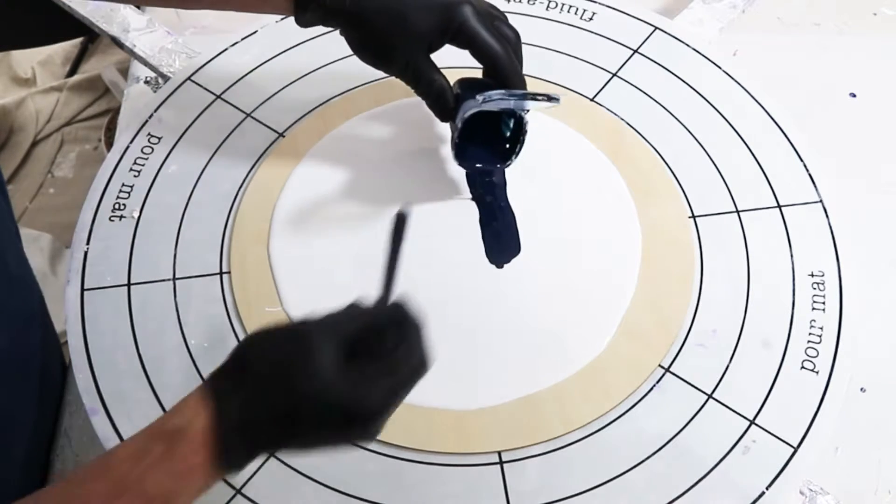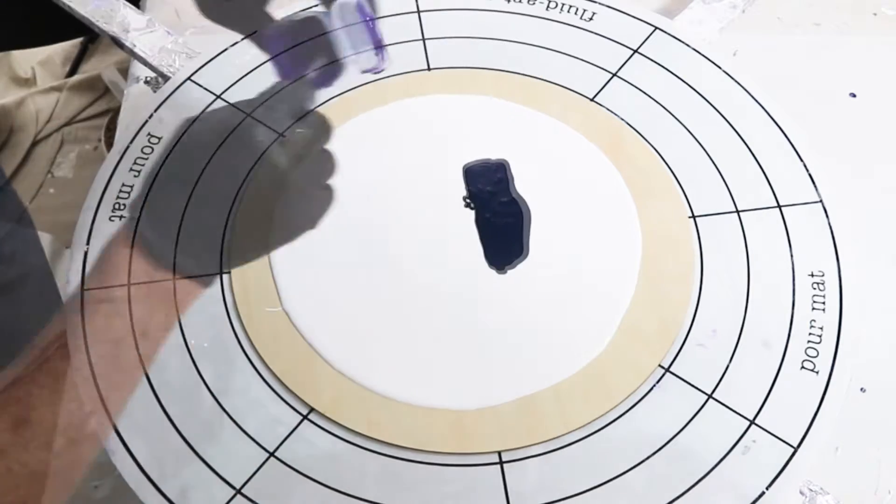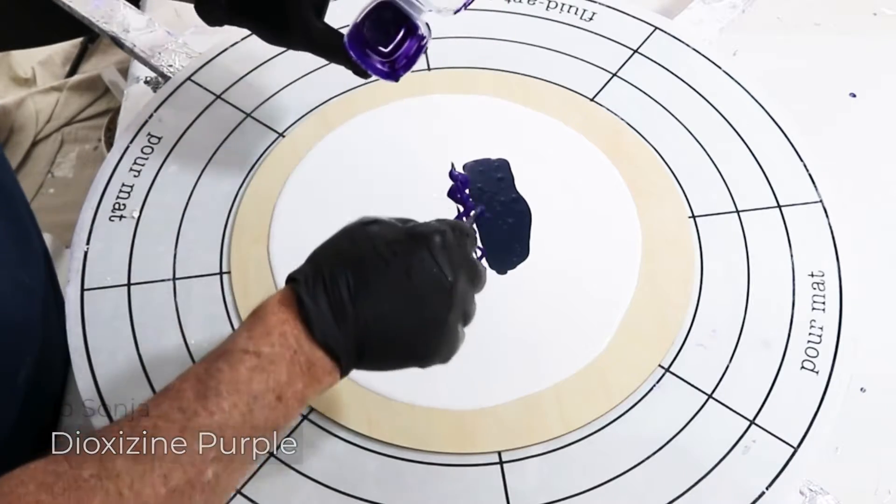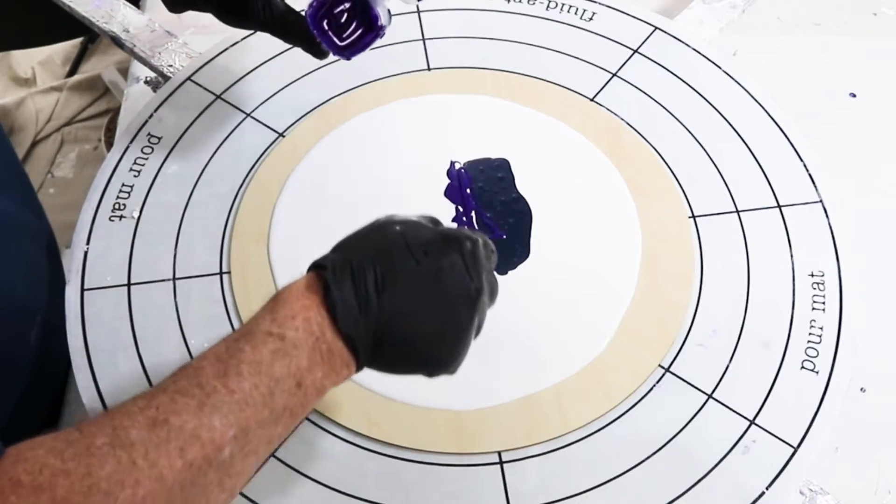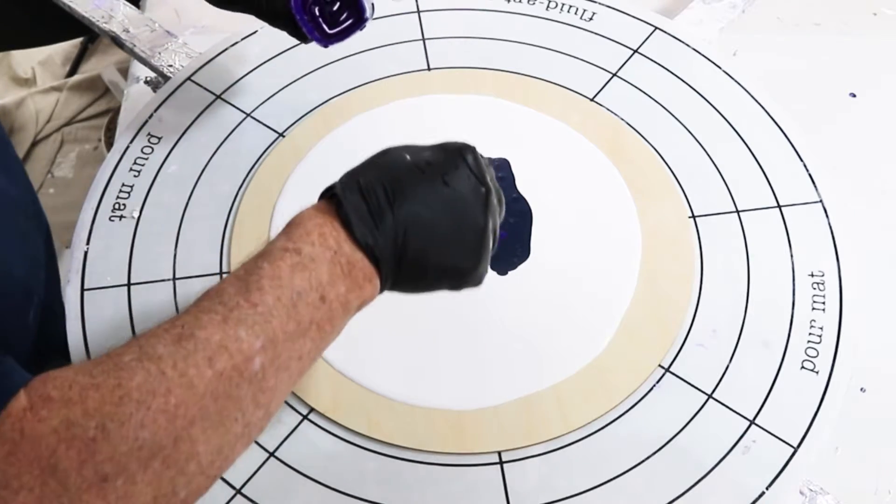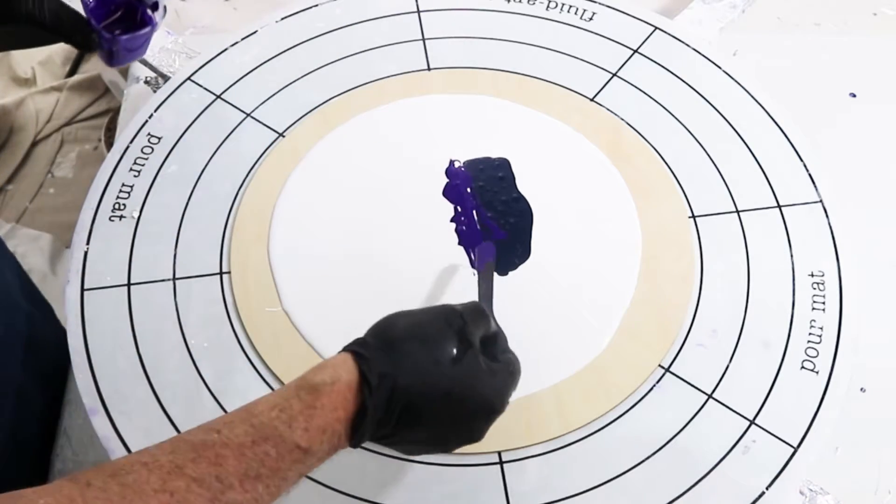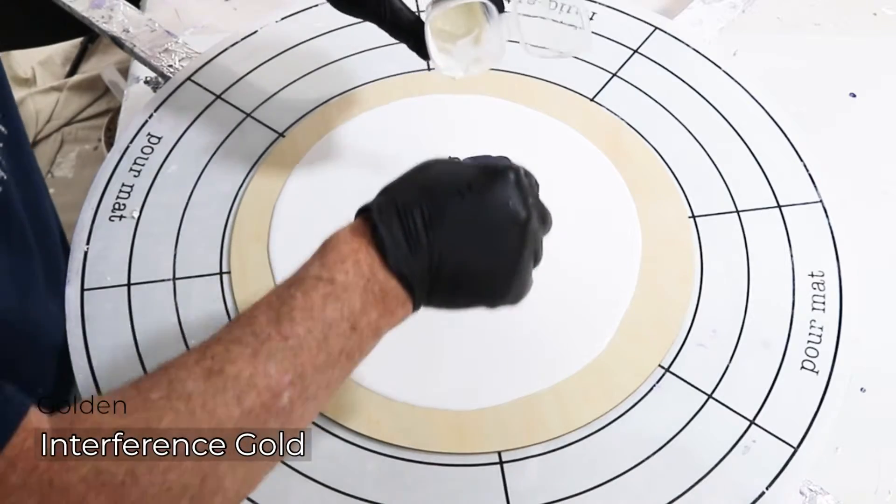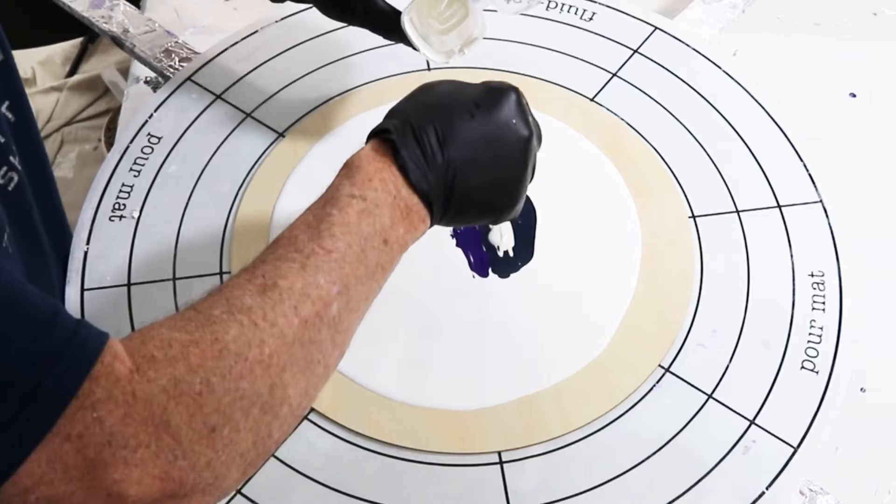Basically it's indigo. This is dioxazine purple by Joe Sonja, finishing off the last of my supply. Next down is interference gold. This is Golden; it's a tube paint.